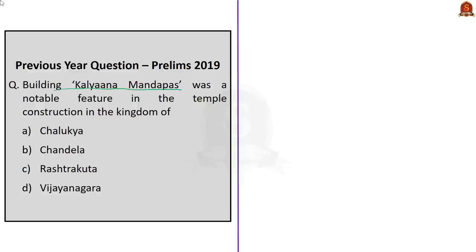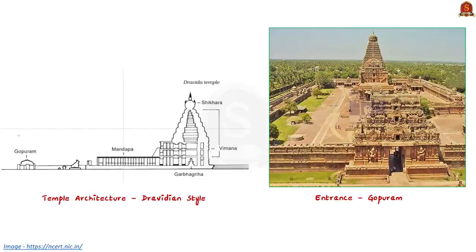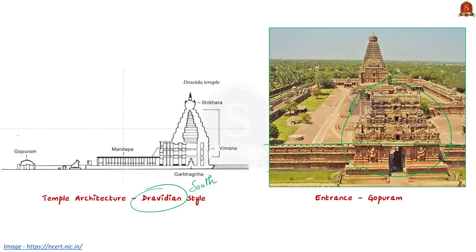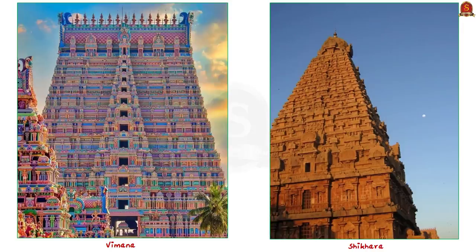To answer this question, you need to know about temple architecture. There are two main styles: Nagara architecture, mostly seen in Northern India, and Dravidian architecture, mostly seen in Southern India. Let us see the distinct features of Dravidian temples. The Dravidian temple is enclosed within a compound wall, and the front wall has an entrance gateway called Gopuram. The main temple tower is known as Vimana, which looks like a stepped pyramid rather than the curving shikara of North India.